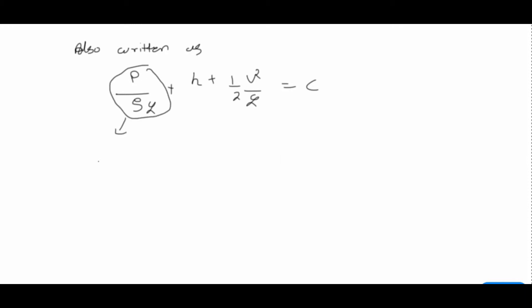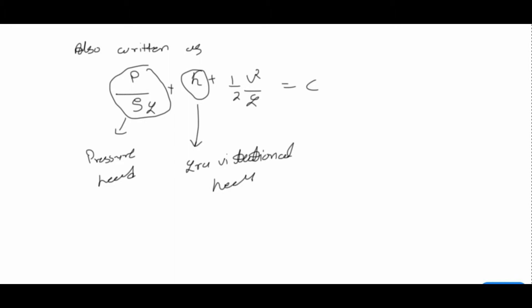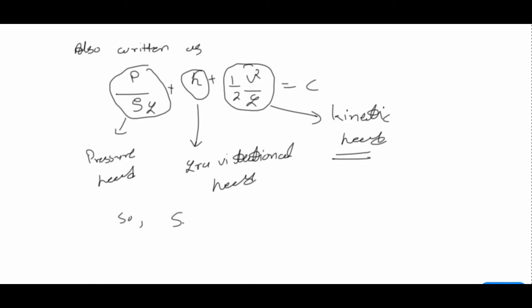P by ρg is known as the pressure head, because its dimension is in meters. h is known as the gravitational head, also in meters. v squared by 2g is known as the kinetic head, also in meters. So the sum of pressure head, gravitational head, and kinetic head is constant. This gives us another equivalent definition of Bernoulli's theorem.